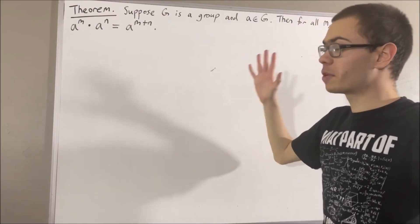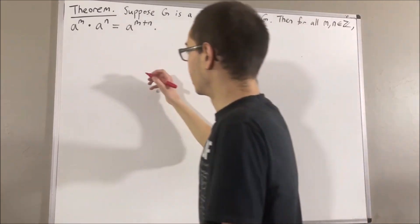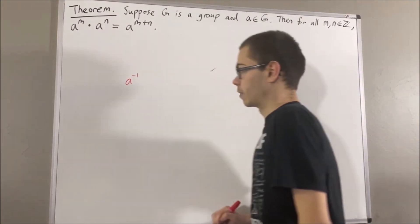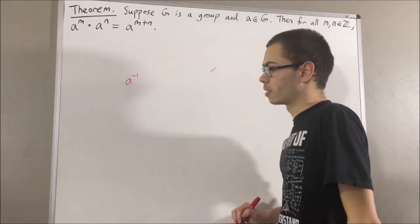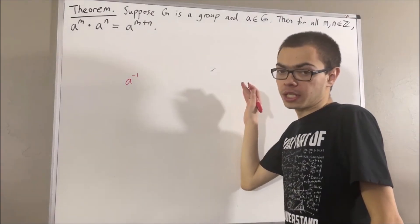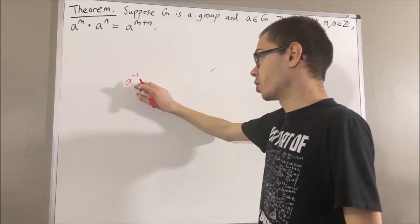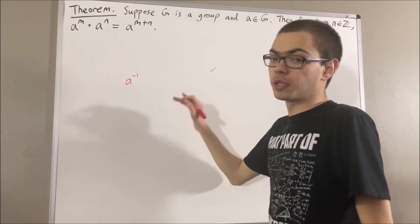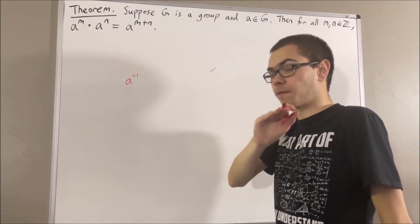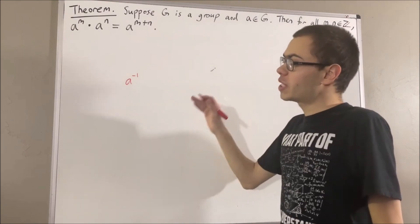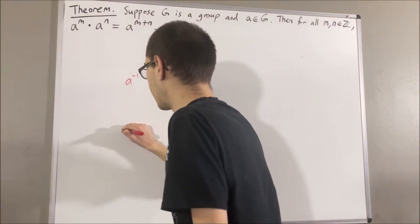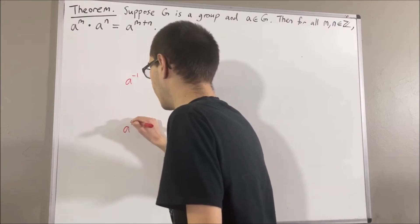Now the notation that we have been using for inverse elements is A with a superscript of negative 1. Now we're about to define integer exponents, and this notation is going to coincide with an integer exponent of negative 1. So to avoid that ambiguity for now, let's pretend as though the notation we've been using for inverse elements is instead A star.